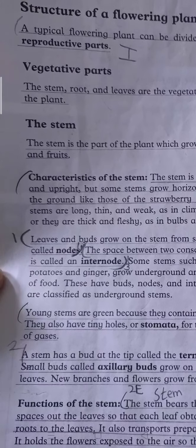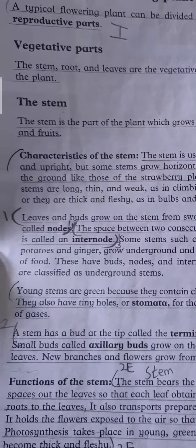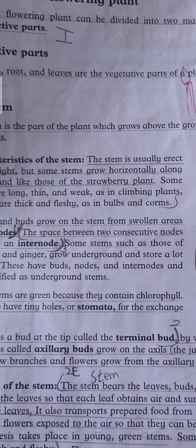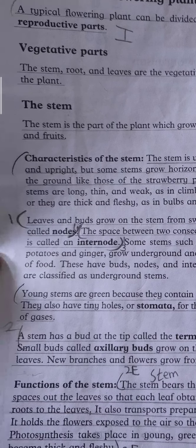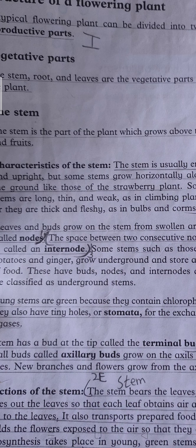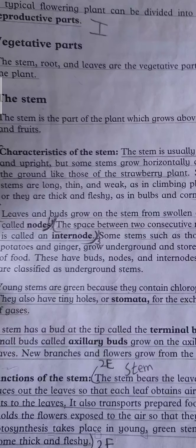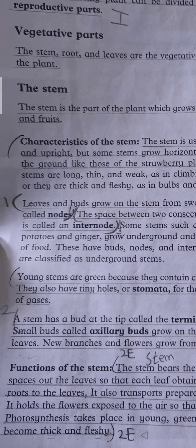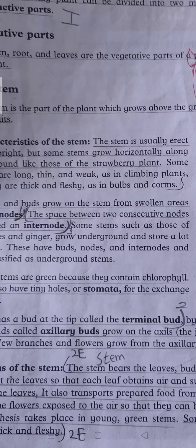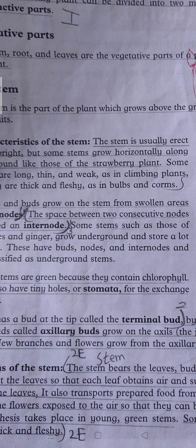Characteristics of the stem: The stem is usually erect and upright, straight. But some stems grow horizontally along the ground, like those of a strawberry plant. If you've ever seen strawberry plants or creepers, then you'll find out that they are thick and fleshy, as in bulbs and corms.